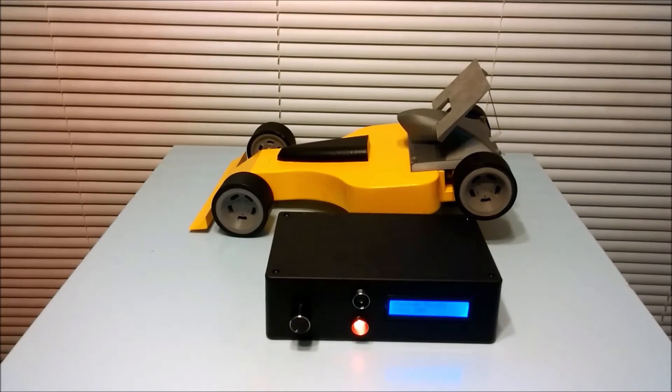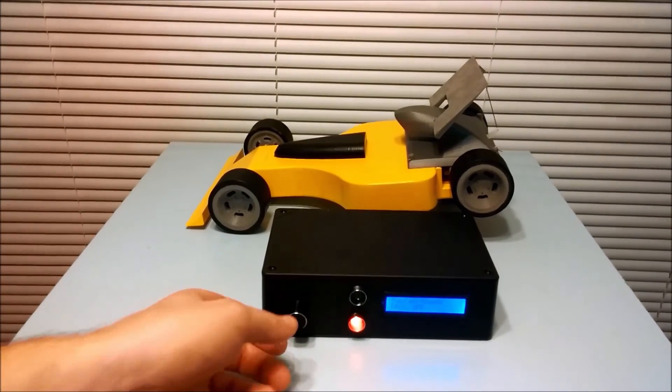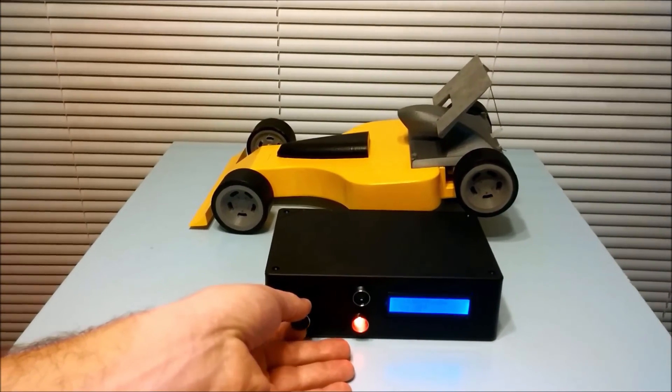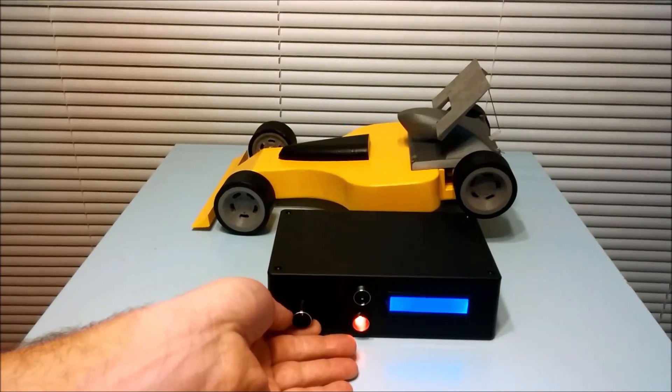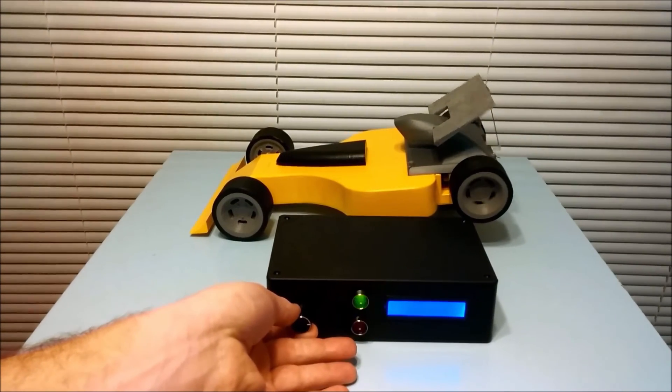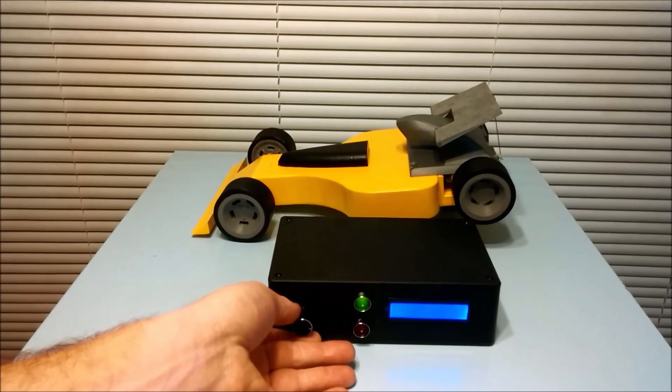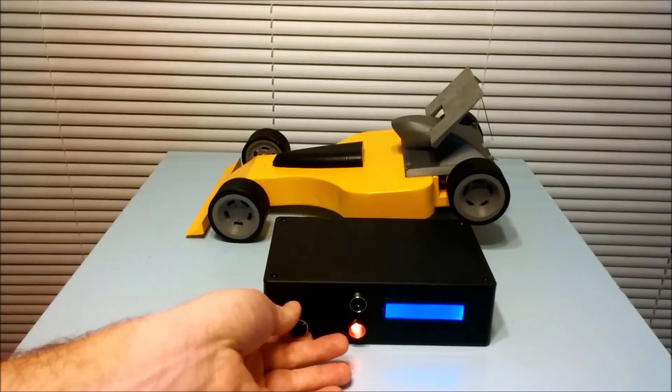Here is a demonstration of the functionality of my drag reduction system. As you can see, when I turn the dial, the speed of the motors increases until it reaches a threshold, at which point the servo is actuated, moving the wing down and turning the green LED on.